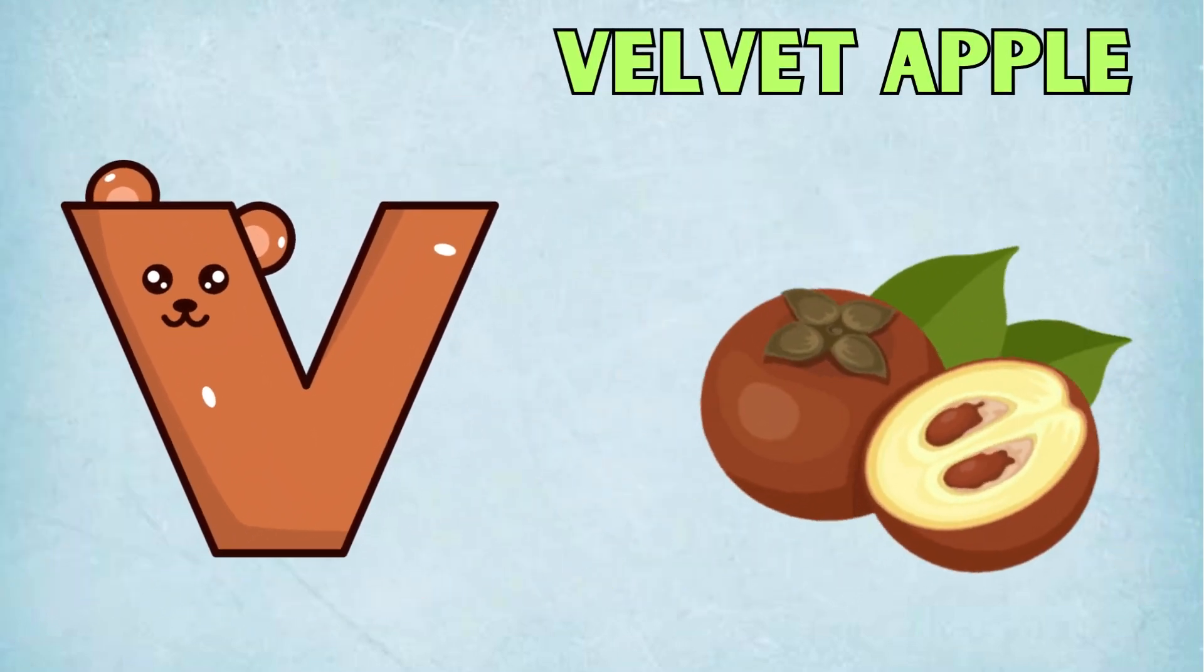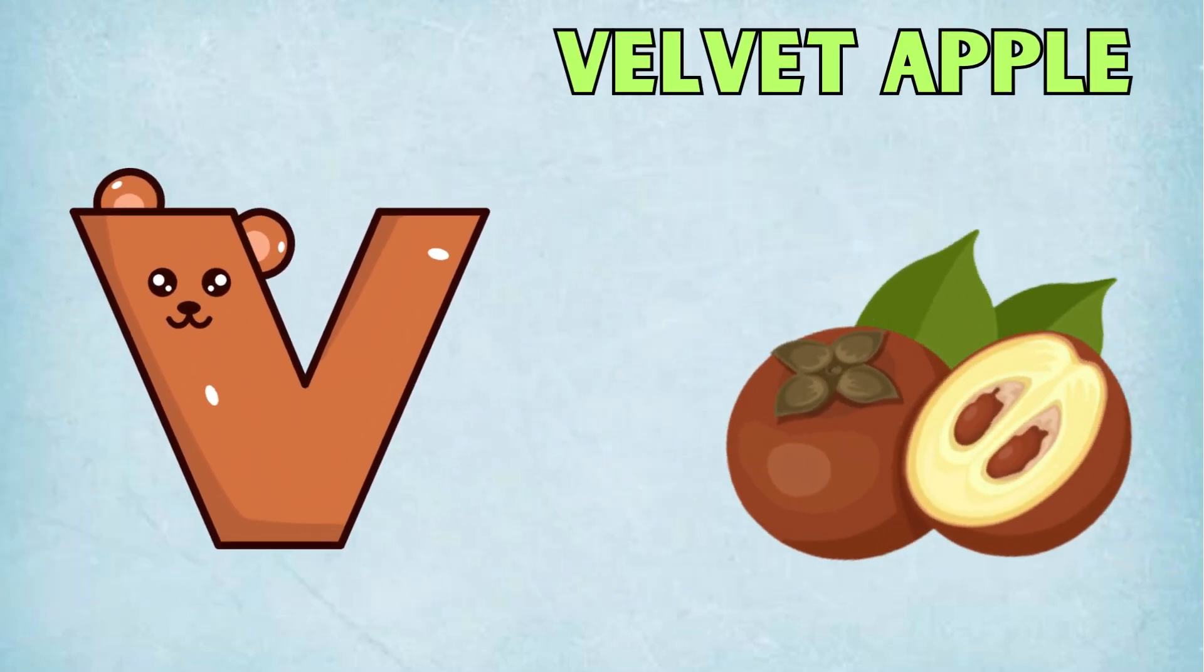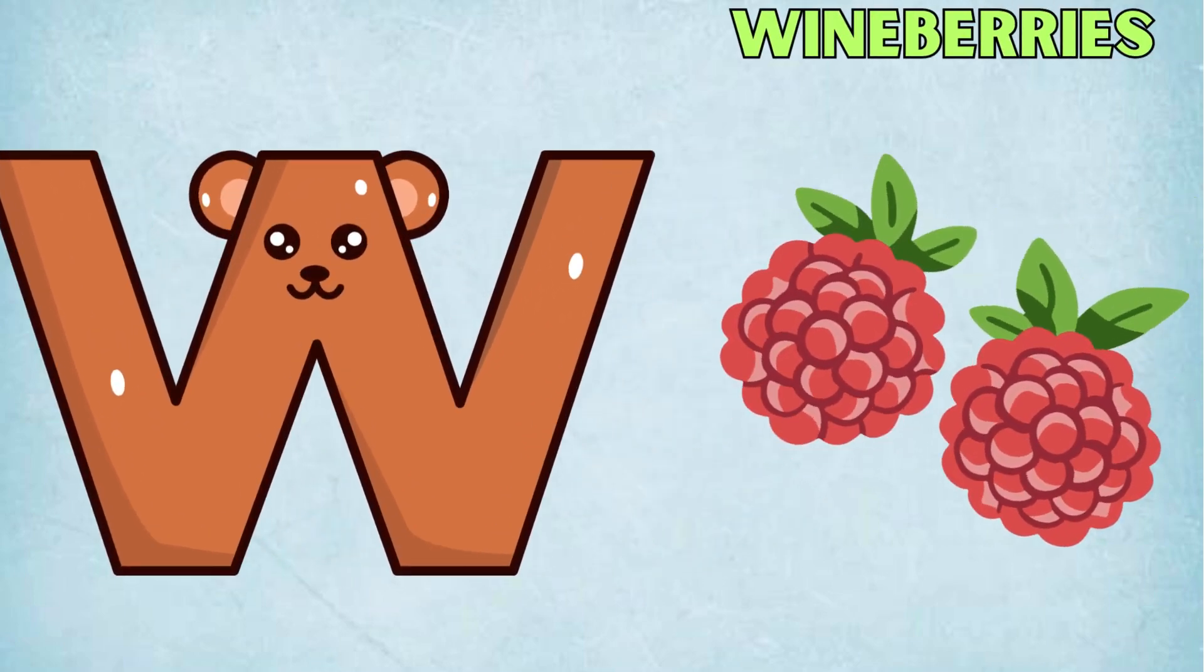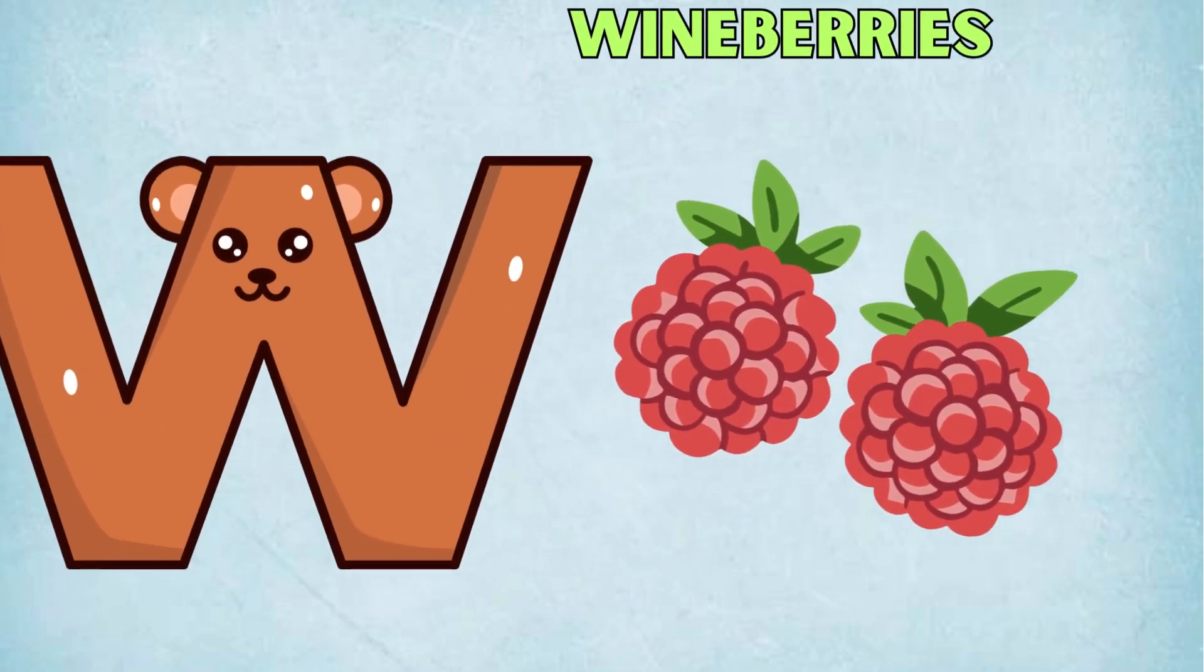V is for Velvet Apple, V, V, Velvet Apple. W is for Wine Berries, W, W, Wine Berries.